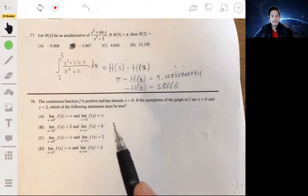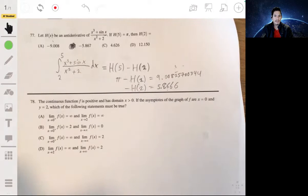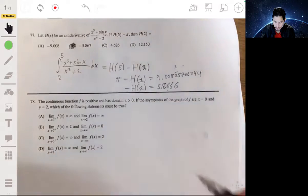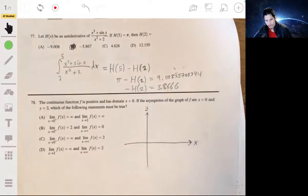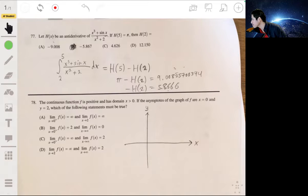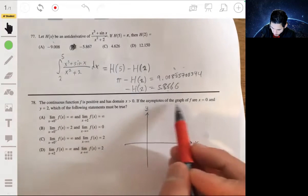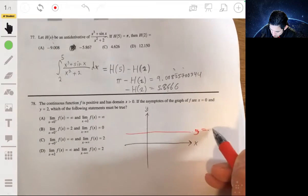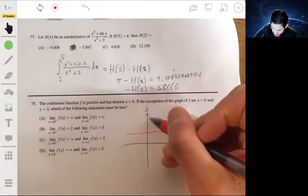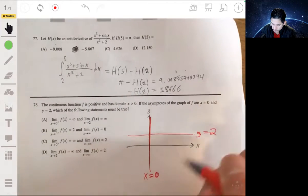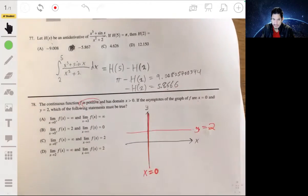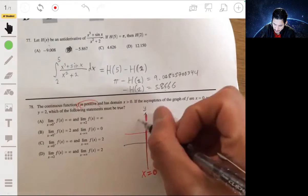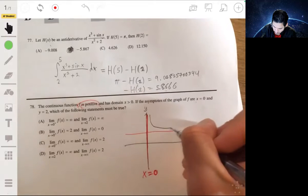Okay, the continuous function f is positive and has the domain x is greater than 0. The asymptotes of the graph of f are x equals 0 and y equals 2. Which statements must be true? And this is a sketch of what this may look like. So we have asymptotes y equals 2, and then x equals 0, so the y-axis. And it says that f is going to be positive, it's going to be above the x-axis. So the only way that makes sense is if it's on this side. And also the domain is x greater than 0, so the graph of f is going to look something like this.